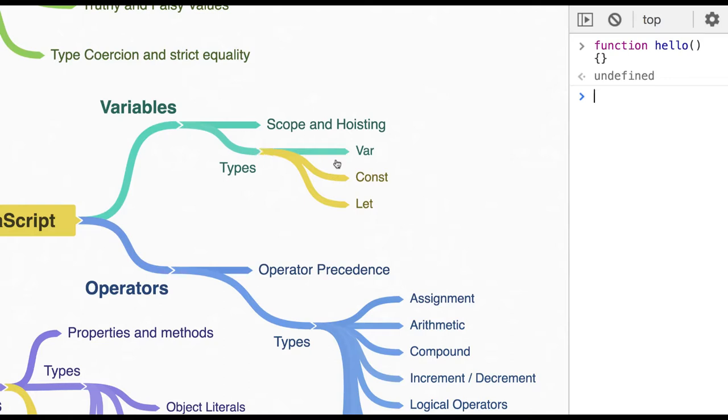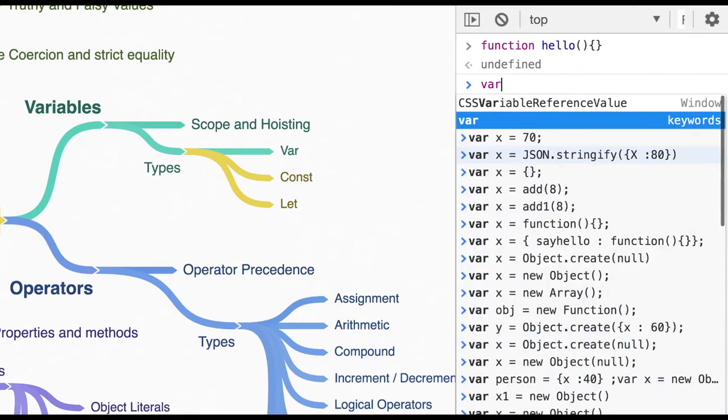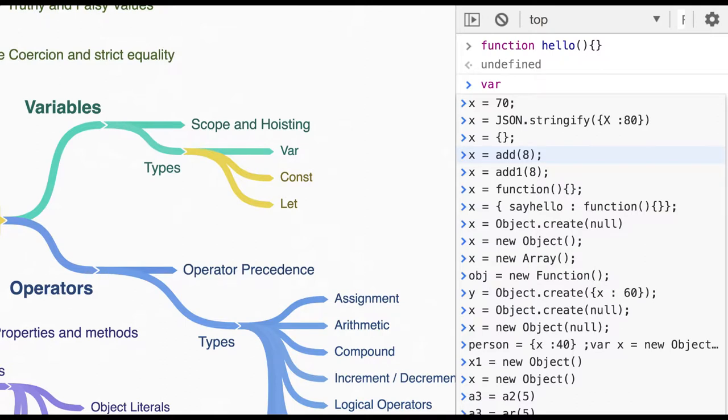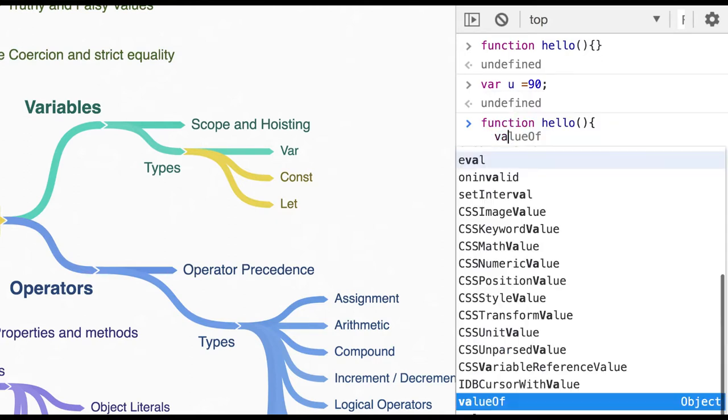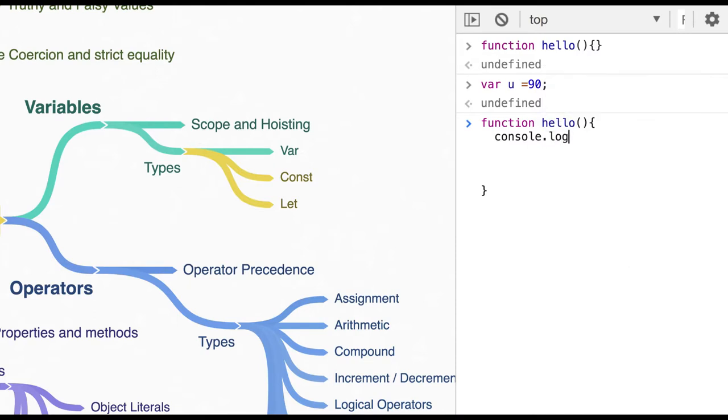Let me explain this again. So there is a variable u equals 90. I'll declare outside, and this is my function hello. And here I have declared u. So here I'm doing console.log u, and here I have put a value.